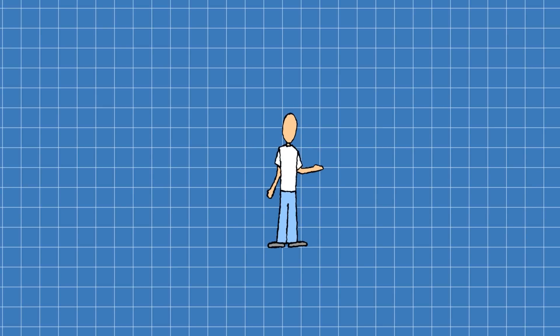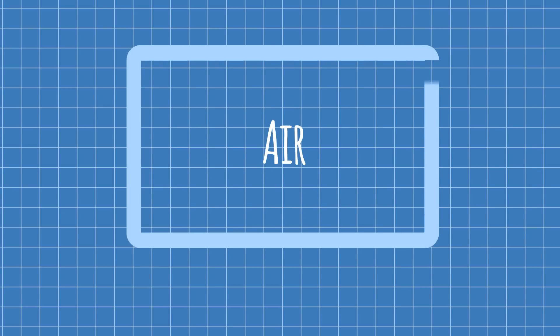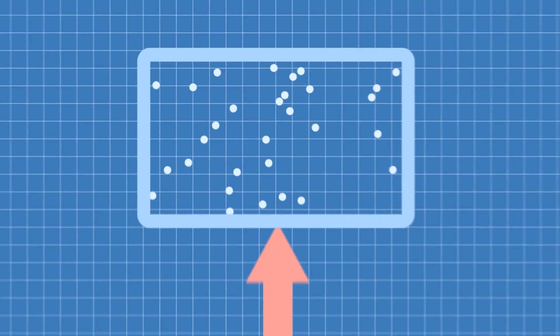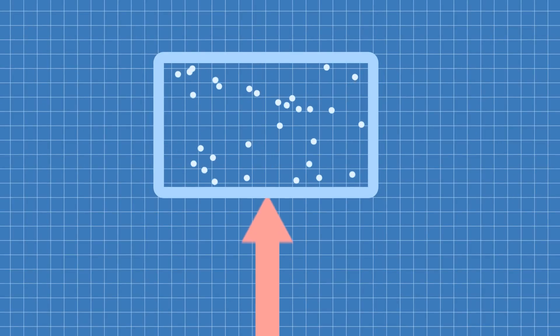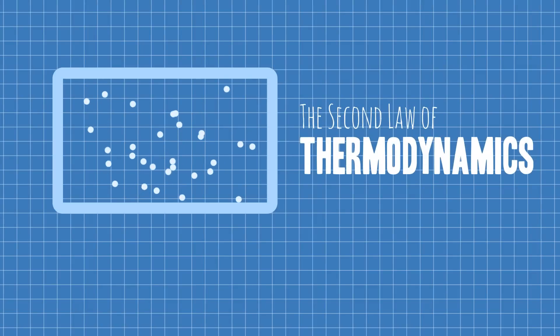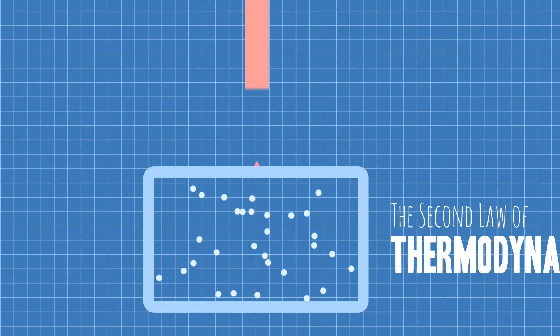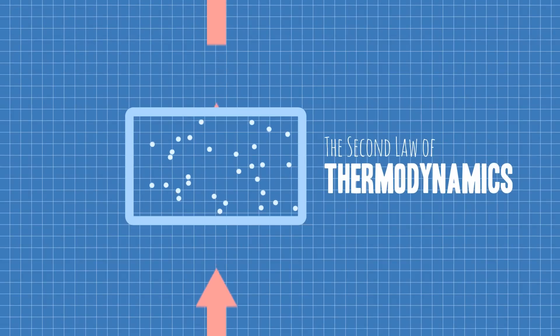Okay, so this next part is going to sound like it's not related, but it is. Imagine a box full of air. Air is really just a bunch of particles flying around at different speeds, and if we add energy to the box, those particles start moving faster and the temperature goes up. One of the most fundamental laws of physics says you can't get energy out of the box unless you first add energy to it.